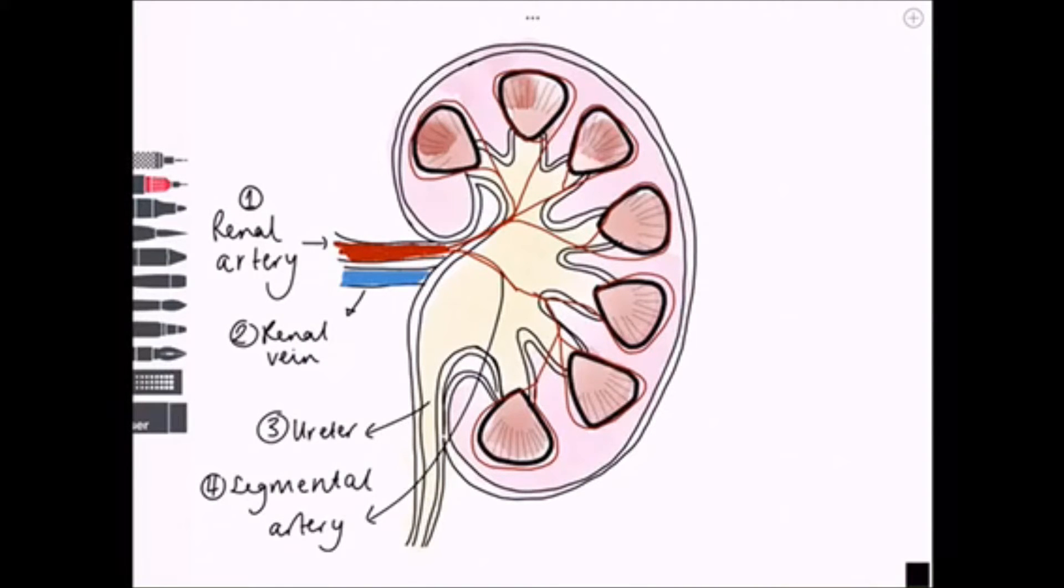Each segmental artery continues up between the lobes to become interlobar arteries, which supply these renal lobes. A renal lobe is a portion of the kidney consisting of a renal pyramid and the renal cortex above it, as indicated here.